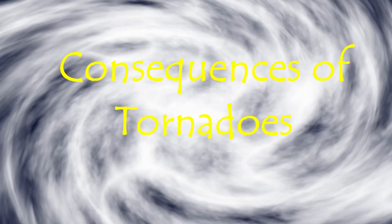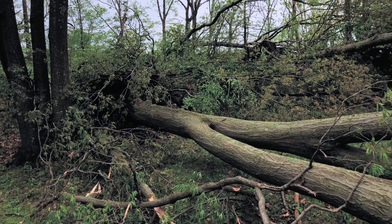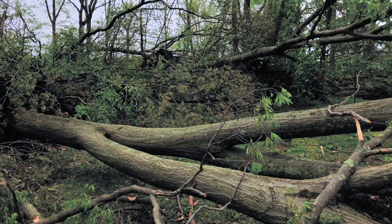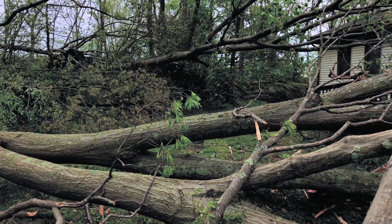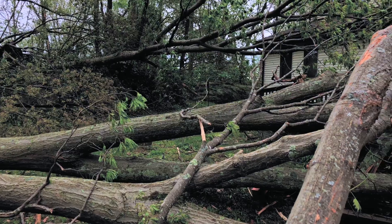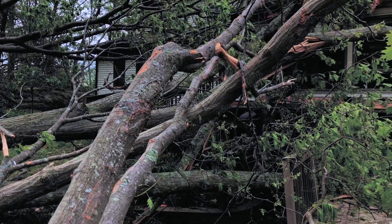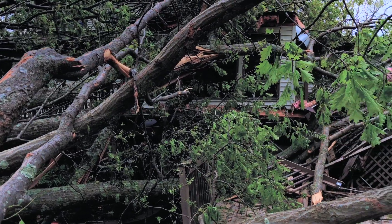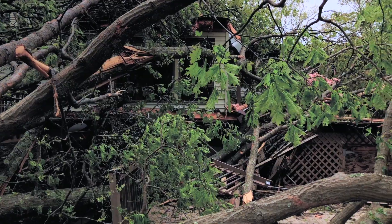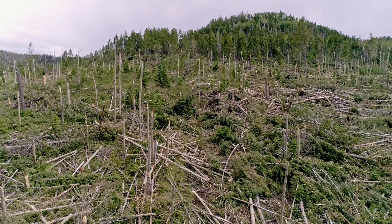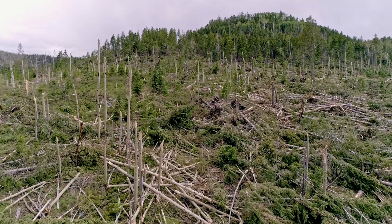Consequences of a Tornado: Tornadoes can have violent and catastrophic outcomes. Depending on their size and speed, they can lead to devastating destruction to life and property. Tornadoes can potentially destroy all types of buildings, pull heavy objects like cars and trees into the air, and put people and animals in the path of the storm at risk of injury. Tornadoes can last anywhere from a few minutes to over an hour.